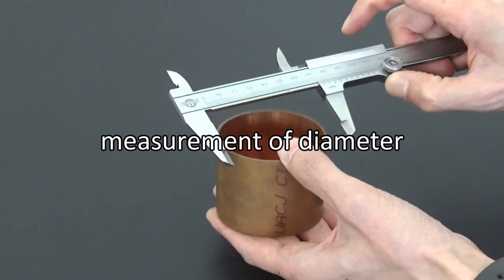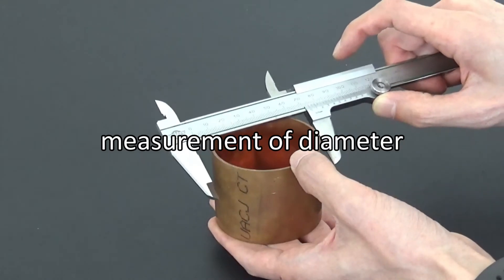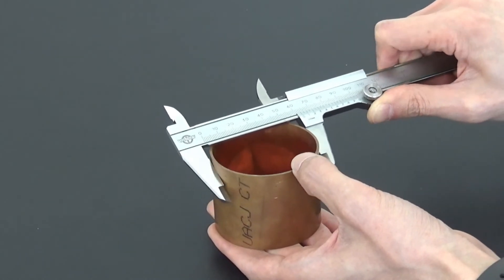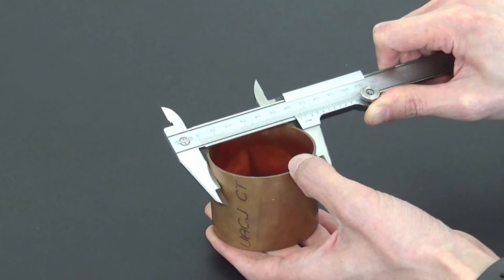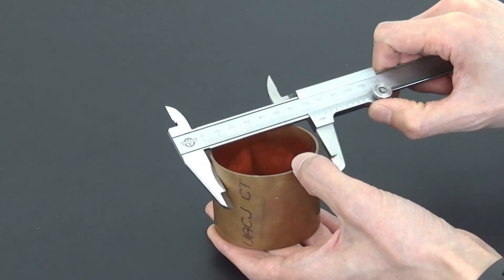Next, we will see how to measure the diameter of a cylinder. To measure the diameter, place the caliper on the cylinder like this. The cross section of a cylinder is not necessarily a perfect circle.